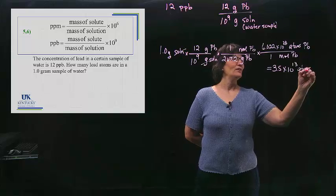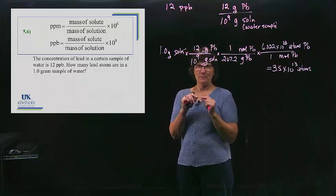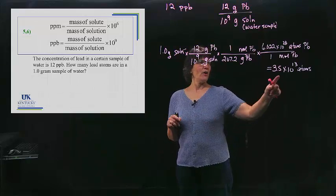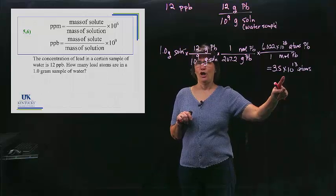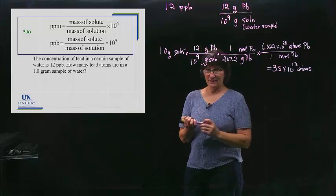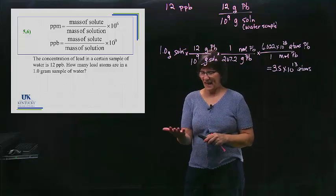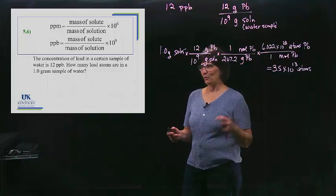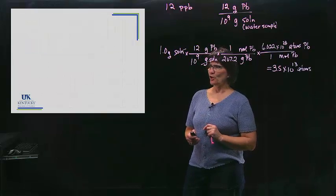So even in this one little gram of water, which is a cubic centimeter, tiny little amount, there are, even with this very low concentration, there's still a lot of lead atoms. But in the big scheme of things, that really isn't very many atoms. We wouldn't even be able to put that many atoms in our hand and know that they were even there. So we've got parts per million and parts per billion.